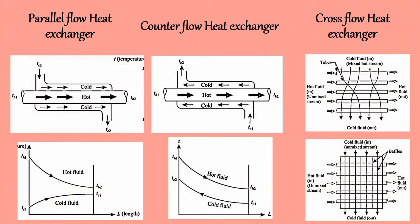From the temperature distribution diagram of a counter flow heat exchanger, we can see that the temperature difference between the two fluids remains more or less nearly constant. For the cross flow heat exchanger, in the first figure, we can see that the hot fluid flows in separate tubes and there is no mixing of the fluid streams, while the cold fluid is perfectly mixed as it flows through the exchanger. In this arrangement, the temperature of the fluid will be uniform across any section and will vary only in the direction of flow.